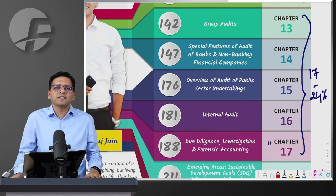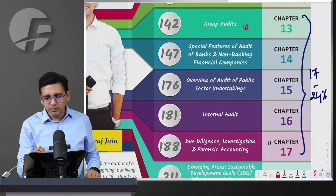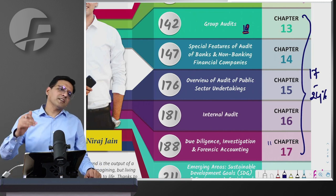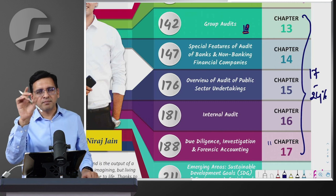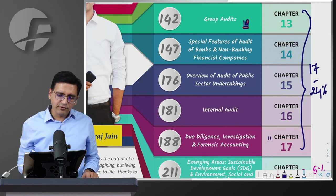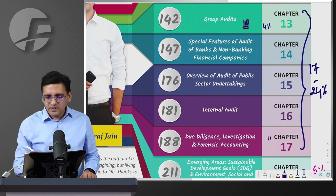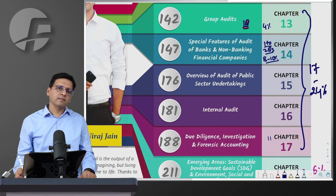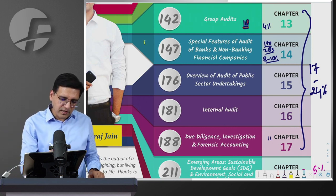I think you can expect one question from group audit - around 4 to 5 marks, approximately 4% weightage. From audit of banks and NBFCs, you can expect 1 to 2 questions - 8 to 10 percent weightage easily. In my view, since there is an NBFC amendment, one question on NBFC and one on banks should come. From an MCQ point of view also this chapter is very important, but normally only one mark MCQ will come from it.